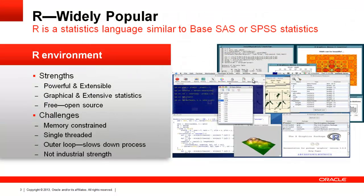With Oracle Advanced Analytics, it comprises two components. There's the SQL data mining functions that have been historically known as Oracle Data Mining, and there's the new integration with R, a widely popular statistical programming language. Our integration with R is called Oracle R Enterprise.